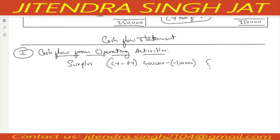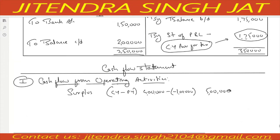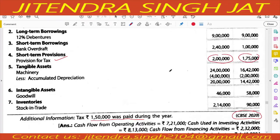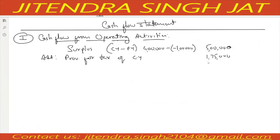Now let's add appropriations. The first appropriation given is current year provision for tax: 1,75,000. No other appropriations — no transfer to reserve, no dividend in the notes to account. So total: 5 lakh plus 1,75,000 = 6,75,000, which is the net profit before tax.